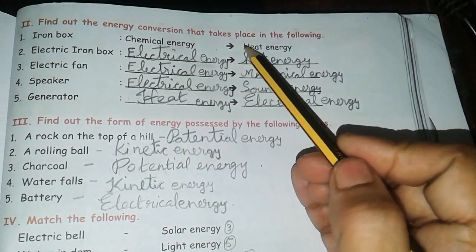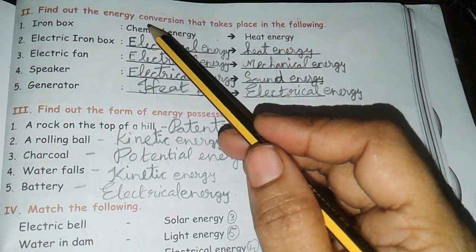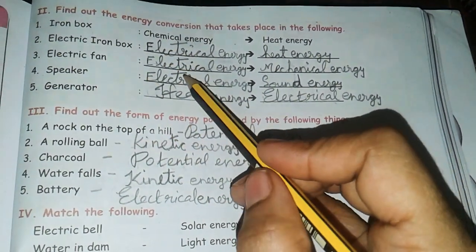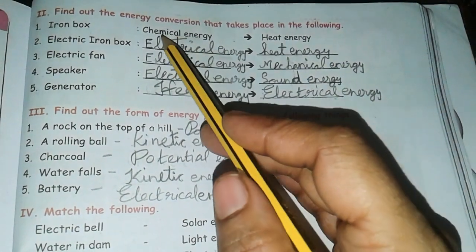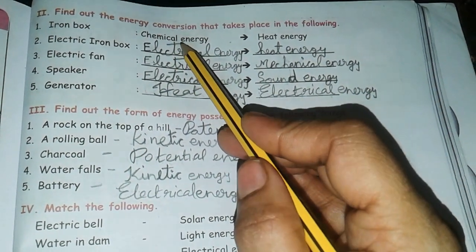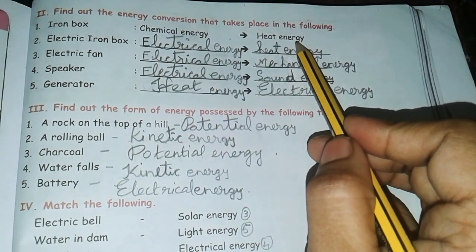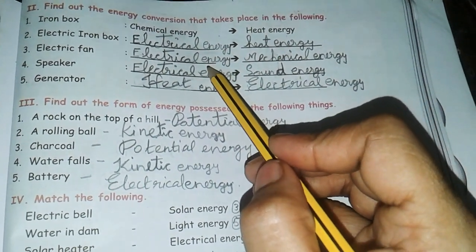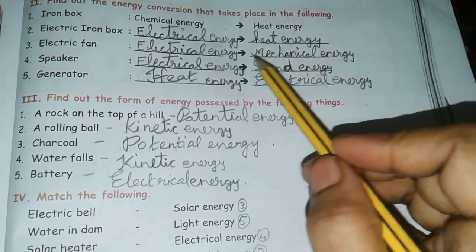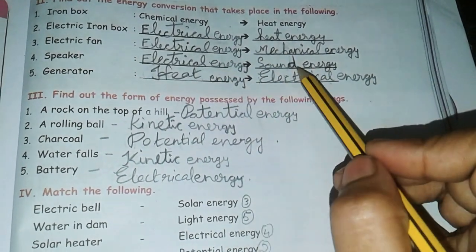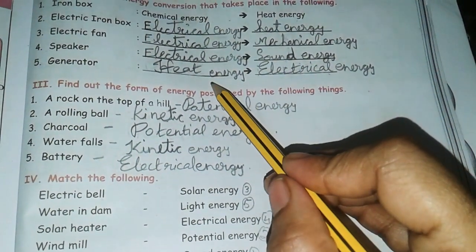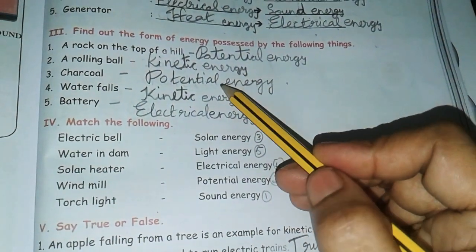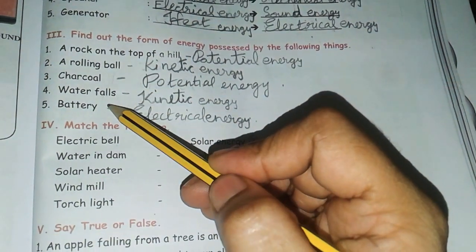Energy conversion - which energy changes into which energy. First one: chemical energy changes into heat energy. Second one: electrical energy into heat energy. Third one: electrical energy into mechanical energy. Fourth one: electrical energy into sound energy. Fifth one: heat energy into electrical energy.